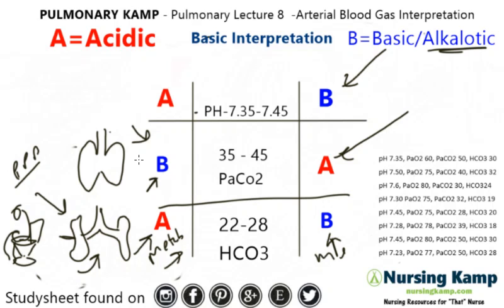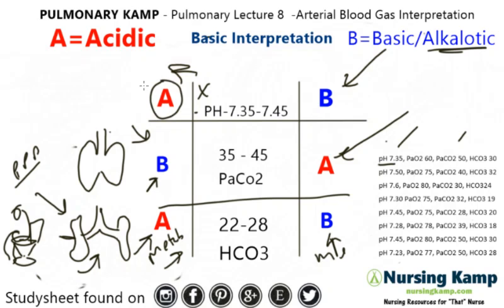So down here is metabolic and here is respiratory. The first thing we do is look at the pH. So pH is 7.35 — it's closer to this acidic area, so we circle that area.